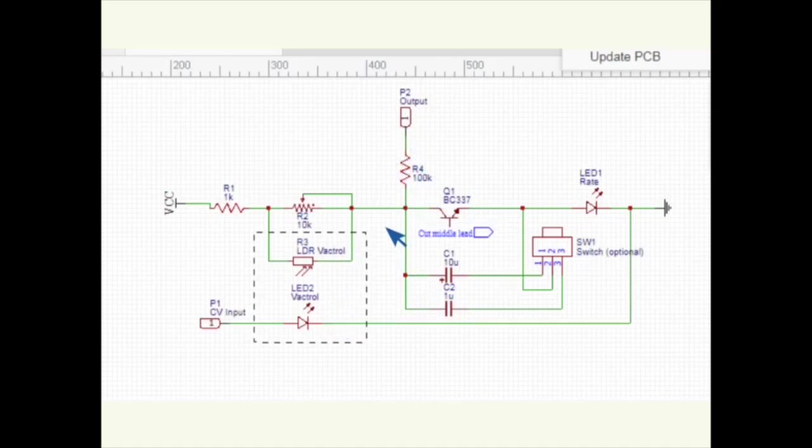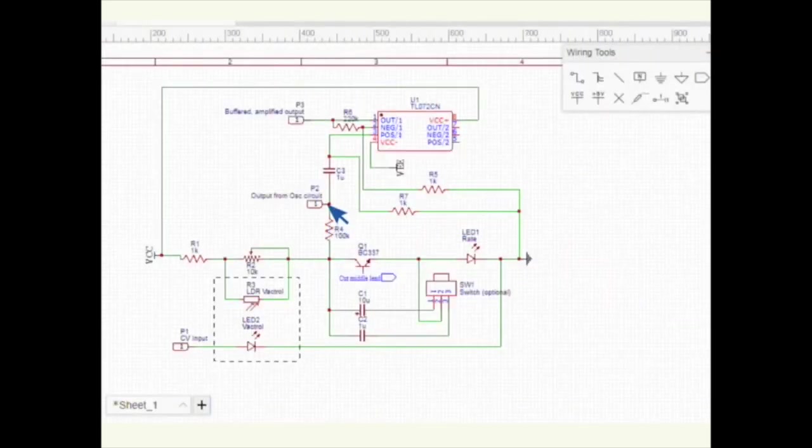And then the second problem, that the output from this one, from this circuit, is really, really low. So then from the output of the oscillating circuit, I added a buffer amplifier circuit. So a TL072, which I just used half of it, and three resistors and one capacitor on the, from the output to the positive input. And then we get an amplified signal out here.